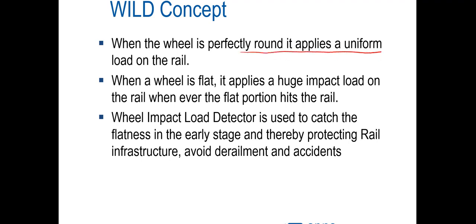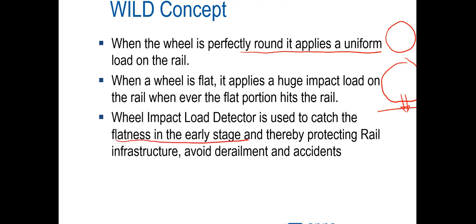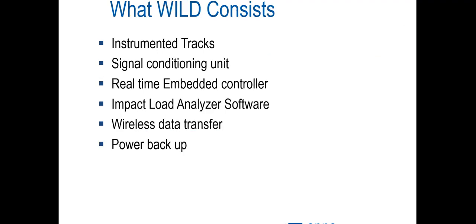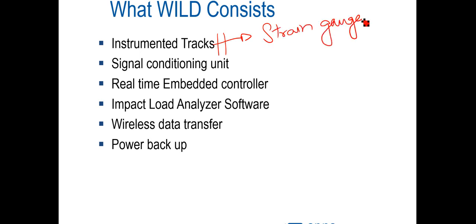When the wheel is perfectly round, there is uniform load on the rail. When the wheel is flat, there is a huge impact load on the rail. The Wheel Impact Load Detector is used to catch this flatness at an early stage and protect the railway infrastructure. The best way to do this is to have an instrumented track — that is, a track fitted with strain gauges that continuously monitor the impact load. If the impact load exceeds a certain level, the system catches it.